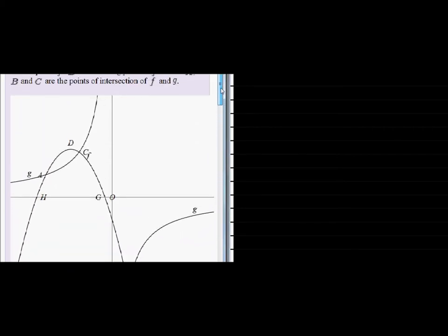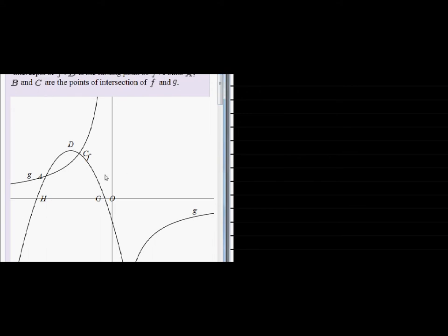There we go. We learned that B and C are points of intersection. So there is C.